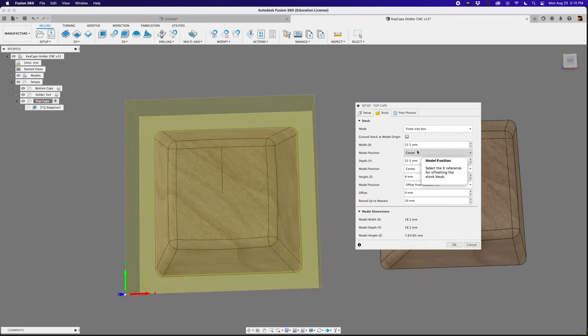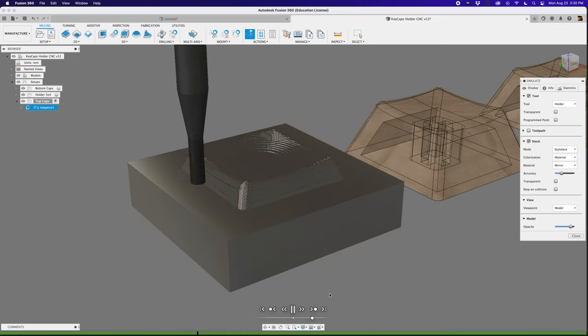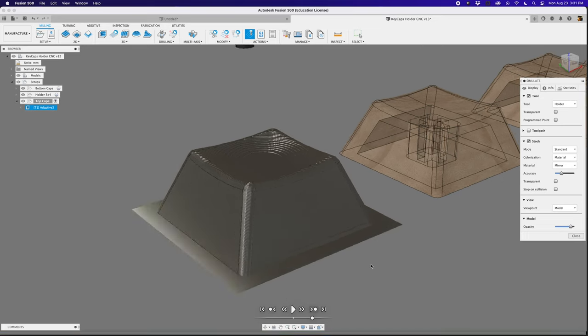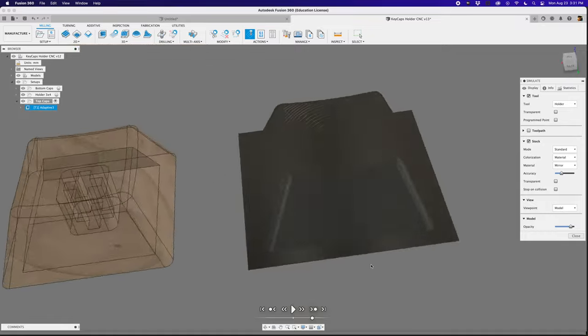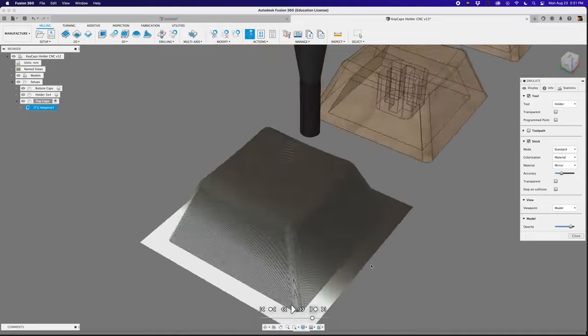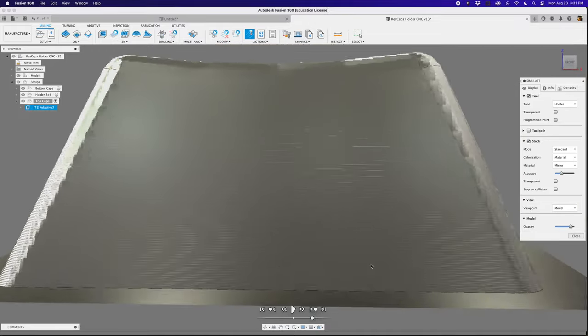To mill the top side, I used a 1/16th inch flat end mill in a single adaptive clearing operation. I set the maximum step down to just half of a millimeter and a fine step down of 0.05 millimeters. This way we can get a nice and smooth surface finish on the outside of the cap.